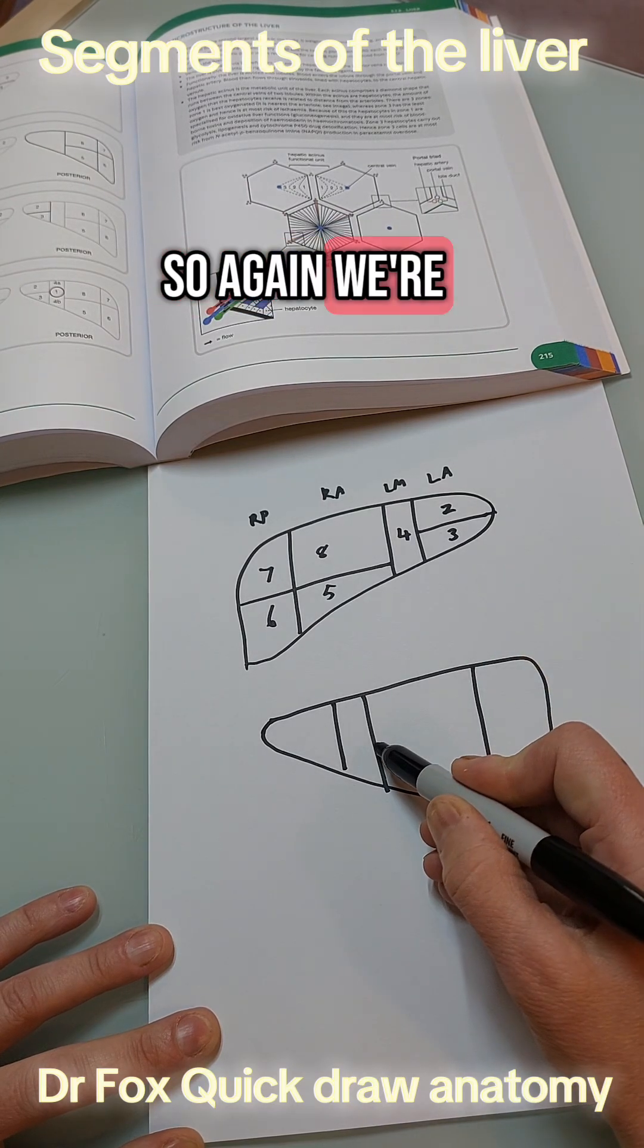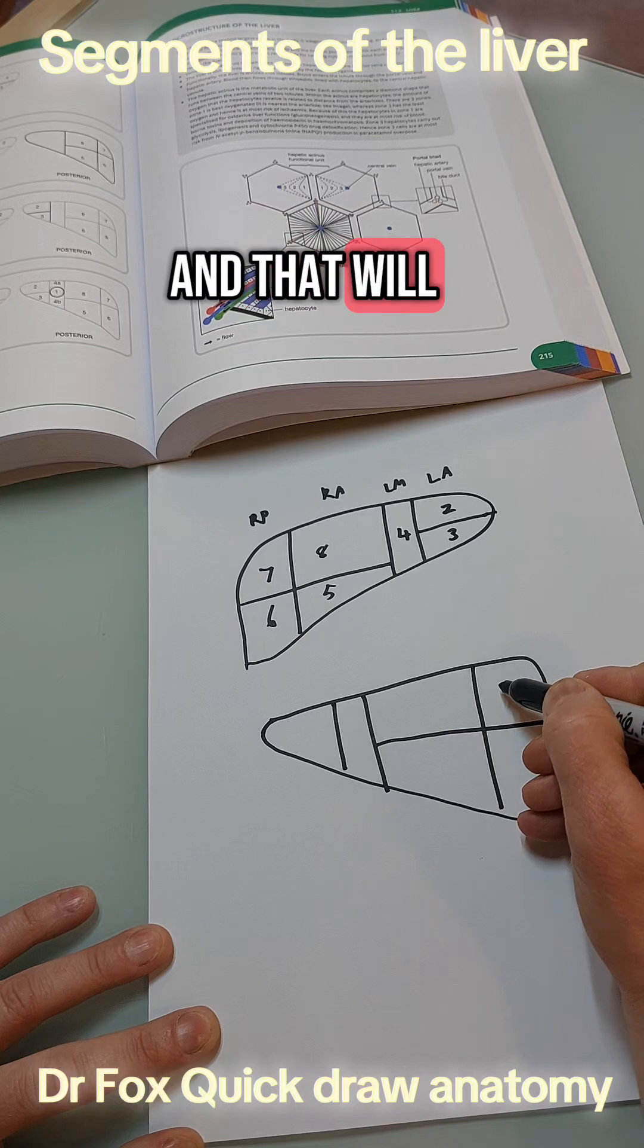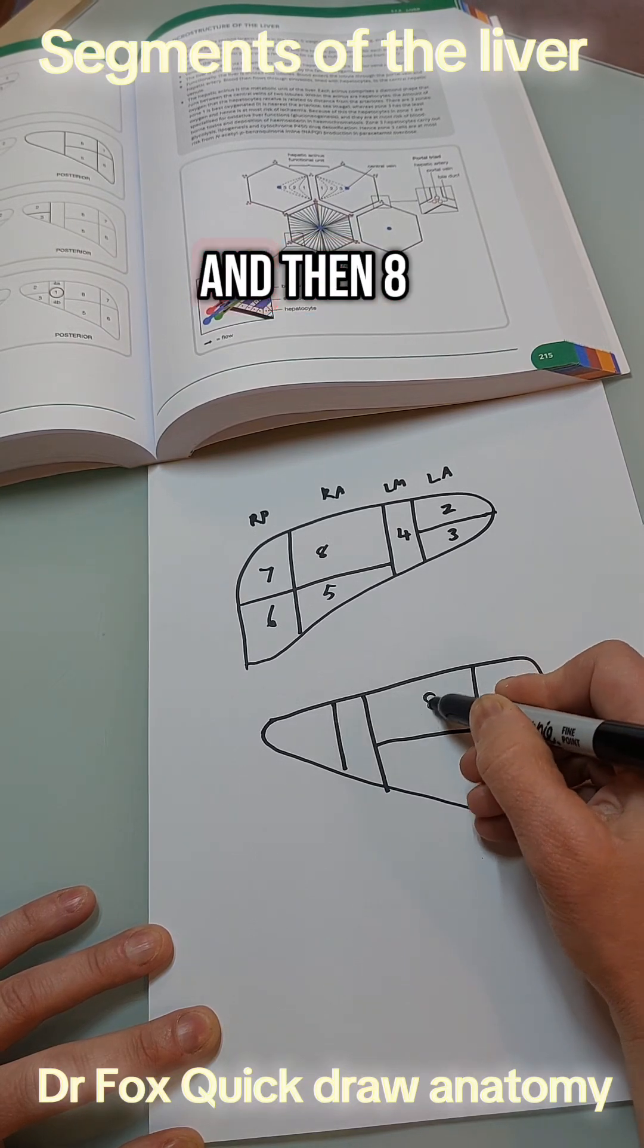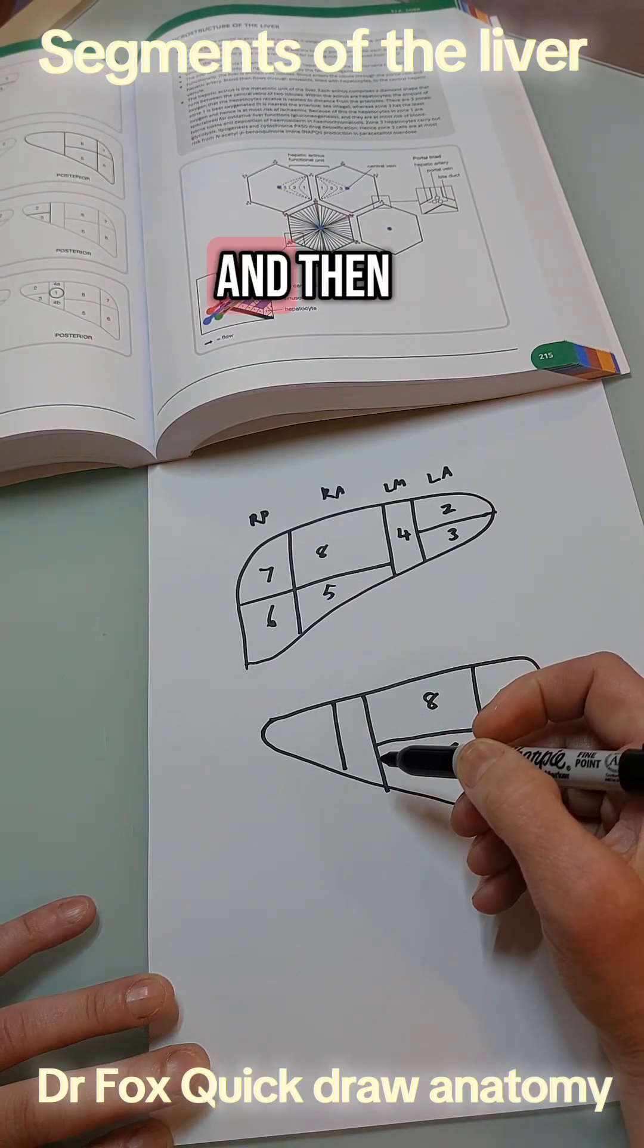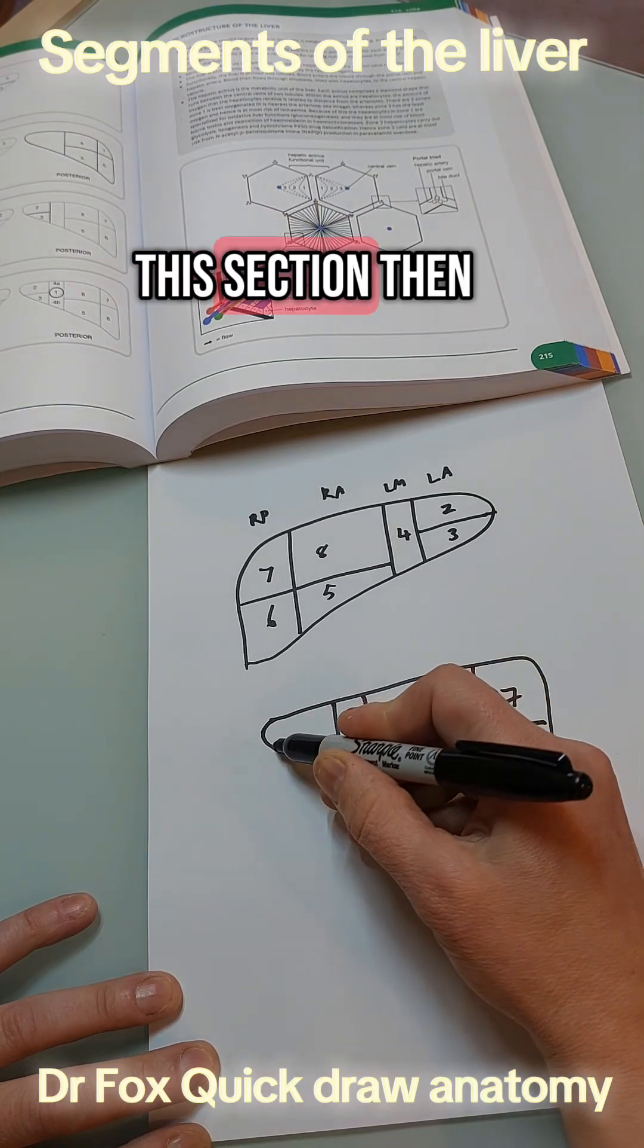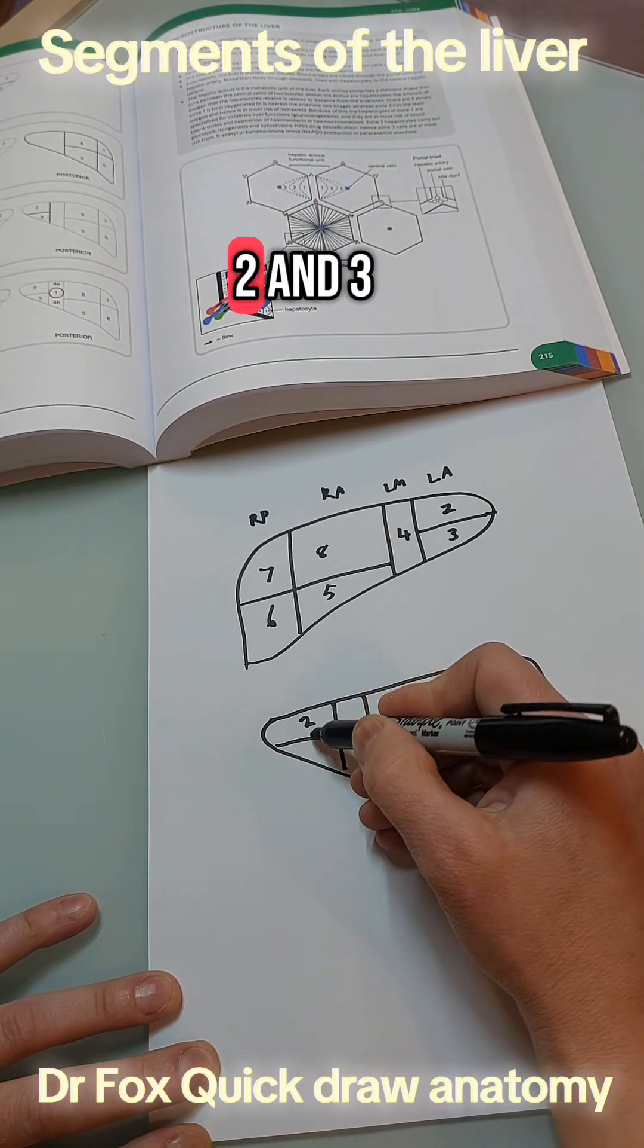So again we're going to separate them here and that'll be seven on the outside and then eight and then six on the outside and then five and then this section then gets split again so you have two and